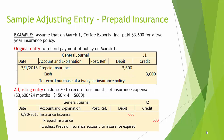Here is a sample adjusting entry for prepaid insurance. Assume that on March 1, Coffee Exports Inc. paid $3,600 for a two-year insurance policy. The original entry to record payment of the policy on March 1 debited prepaid insurance $3,600 and credited cash $3,600. The adjusting entry on June 30th to record four months of insurance expense is calculated as follows: $3,600 divided by 24 months equals $150 per month, times four months equals $600. Therefore, the adjusting entry would debit insurance expense $600 and credit prepaid insurance $600.